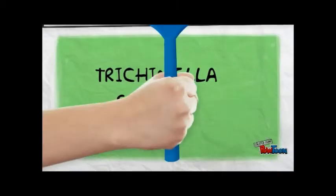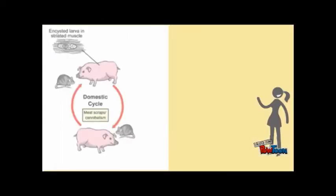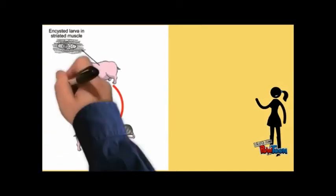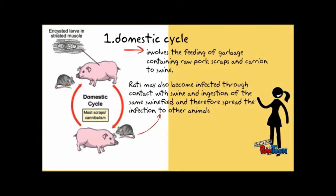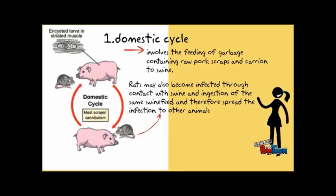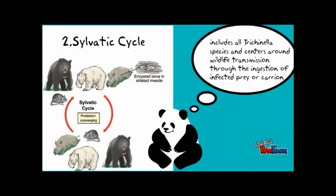There are two types of transmission of Trichinella spiralis. First, the domestic cycle involves the feeding of garbage containing raw pork scraps carried to swine. Rats may also become infected through contact with swine and ingestion of the same swine feces, and therefore spread the infection to other animals. Second, the sylvatic cycle includes all Trichinella species and centers around wildlife transmission through the ingestion of infected prey.